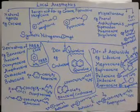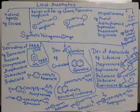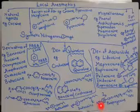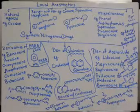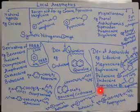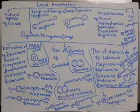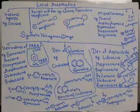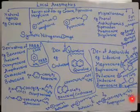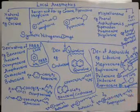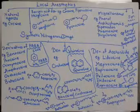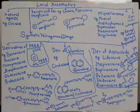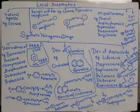For propoxycaine: add the basic PABA setup, then add a propoxy group (3 carbon atoms and oxygen) at the ortho position, and draw the procaine-type tertiary amine. The procaine-type tertiary amine is present in procaine, chloroprocaine, and propoxycaine.